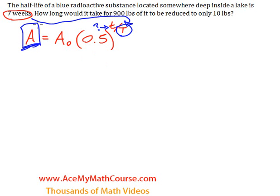What is our A? This is the final quantity, so it's 10 pounds. And A0 is the beginning quantity, so that's 900 pounds.